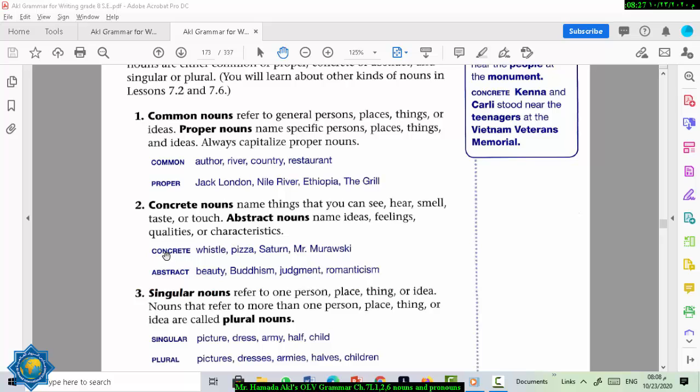Examples of concrete nouns are like whistle, because you can hear it. Pizza, you can eat it, and taste it. Saturn, and names of people, Mr. Murawski. Abstract nouns like beauty, Islam, judgment, romanticism.